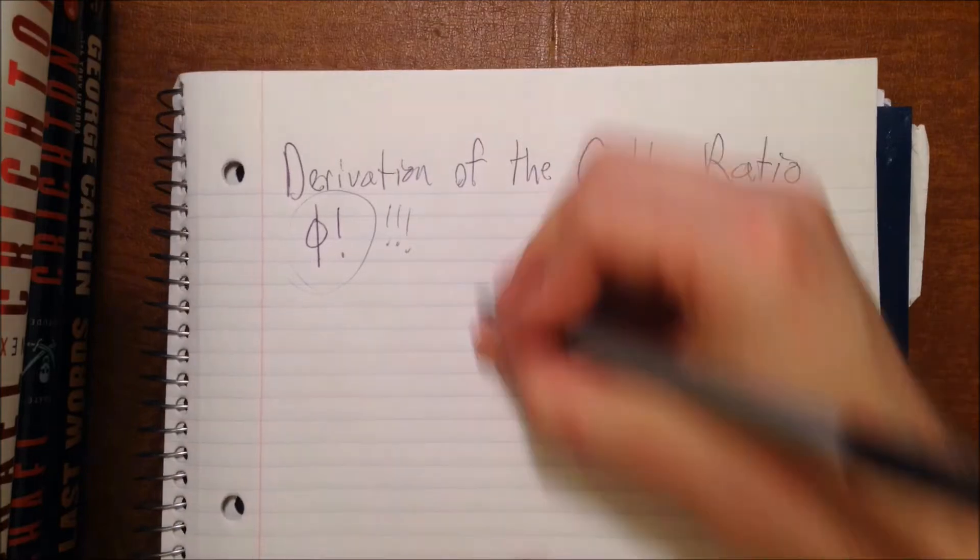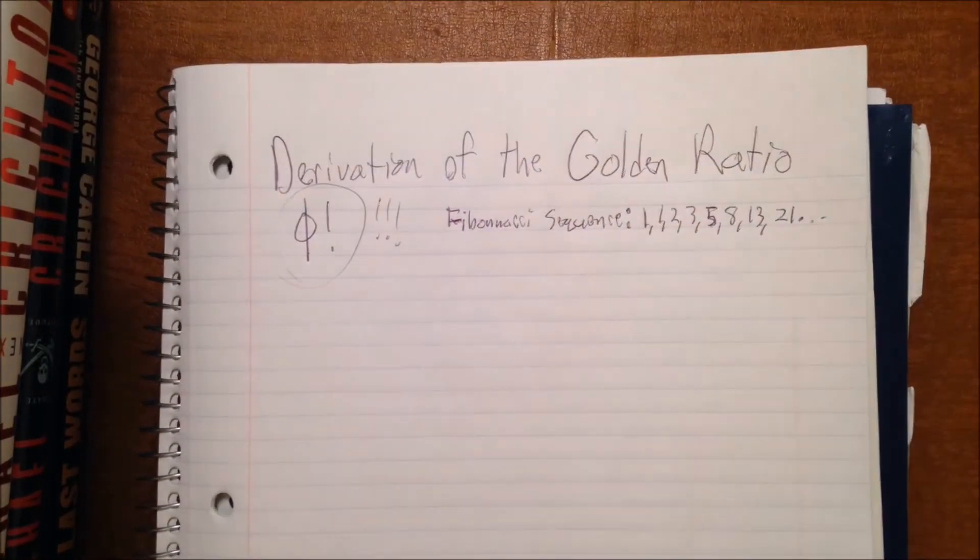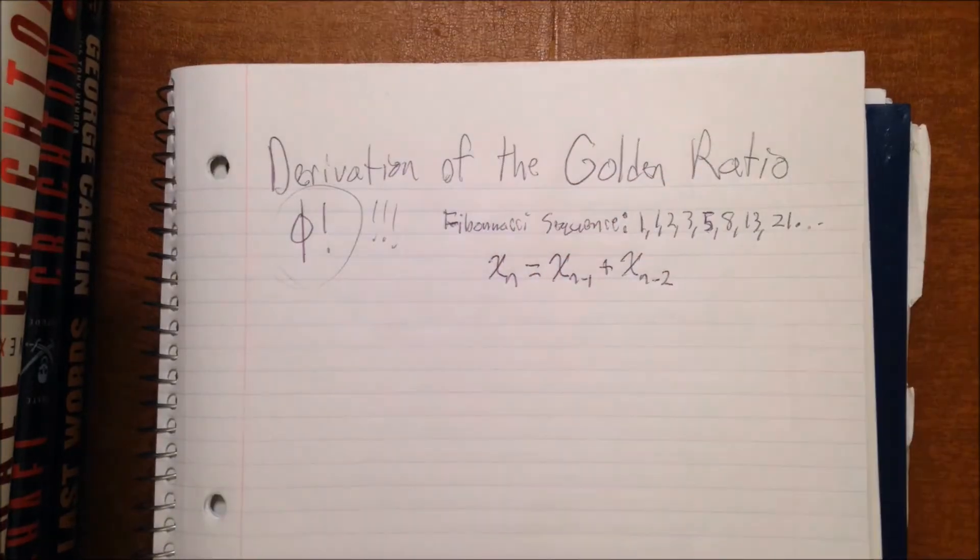So if you've heard of the Fibonacci sequence you probably know that it's the sequence where we get each new term xn by adding the previous two terms xn-1 and xn-2. You can see that right here in the sequence: 1 plus 1 is 2, 2 plus 1 is 3, 3 plus 2 is 5, 5 plus 3 is 8, and so on.